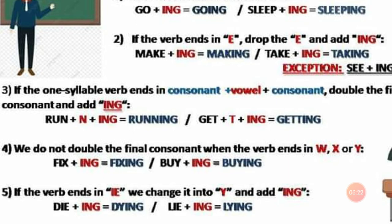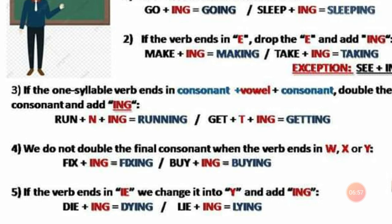We do not double the final consonant when the verb ends in W, X, or Y. Esta es la excepción: aunque tenga un verbo monosílabo que termine en consonante-vocal-consonante, no voy a doblar si termina en W, X, o Y. Ejemplo: FIX — F es consonante, I es vocal, X es consonante — pero no doblamos porque termina en X: fix + ING = fixing — reparar, reparando. La cuarta regla: if the verb ends in IE, change IE to Y and add ING. Si el verbo termina en IE, cambiamos IE por Y y añadimos ING: die + ING = dying — morir, muriendo; lie + ING = lying — mentir, mintiendo.